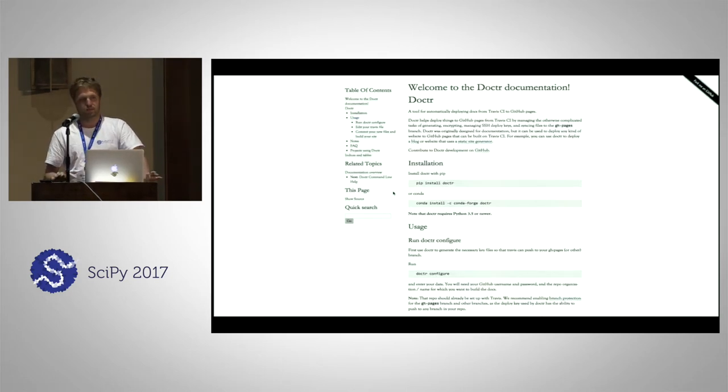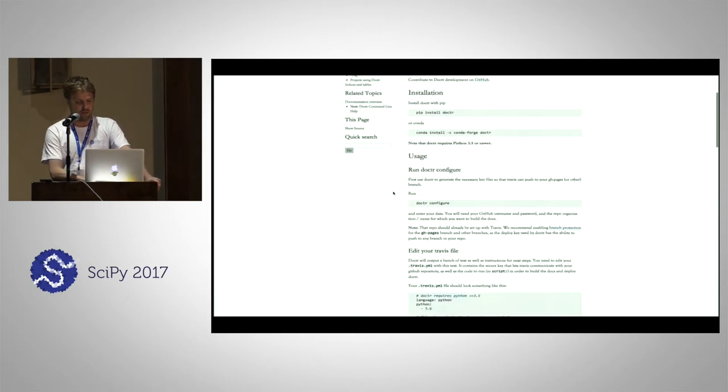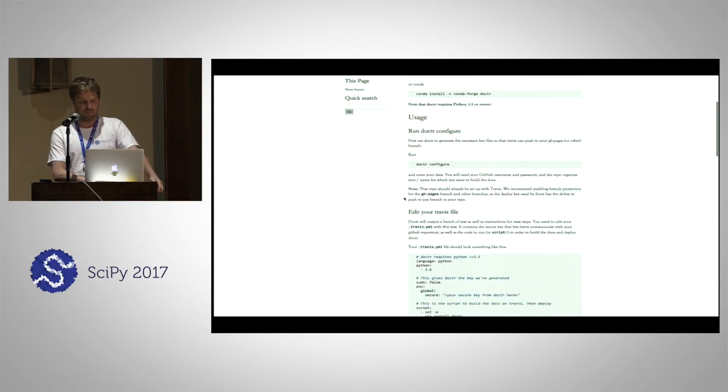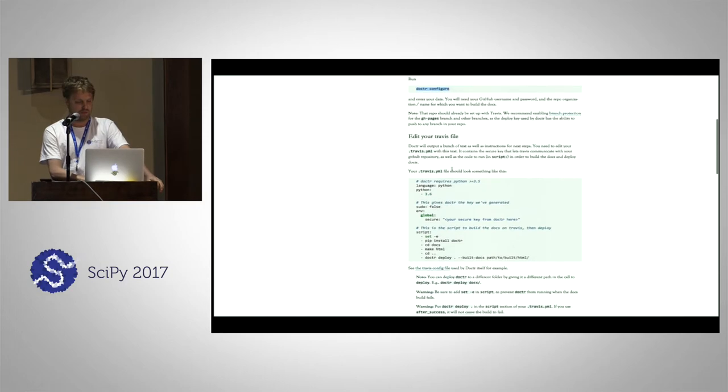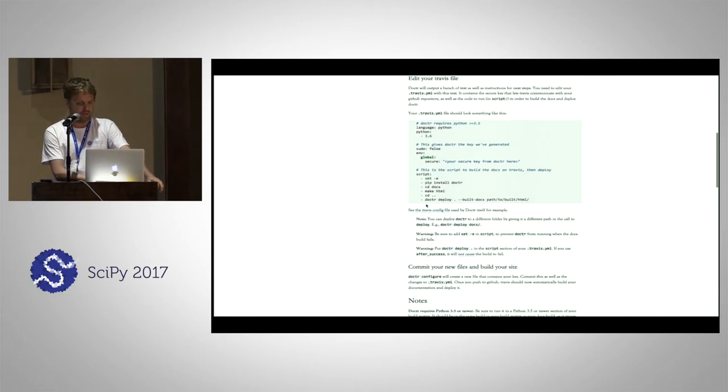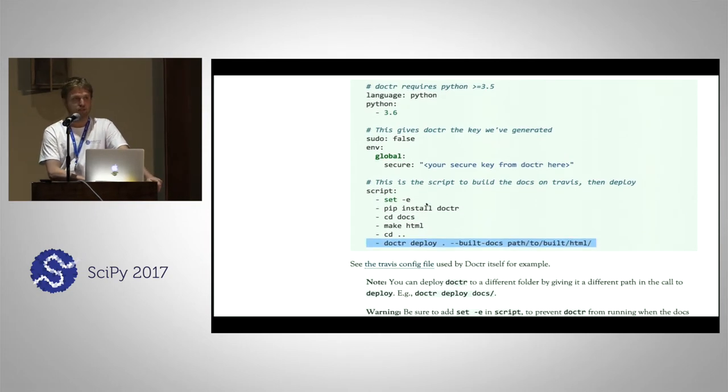Last year at SciPy, I was talking with Gil Forsyth about this and we said maybe we should just write something that does all this for you. That's how Doctr was born. You just install it with pip or conda and it's basically two steps. You run Doctr configure and that'll ask you some questions, then you just put one line in your Travis file and it syncs everything for you.